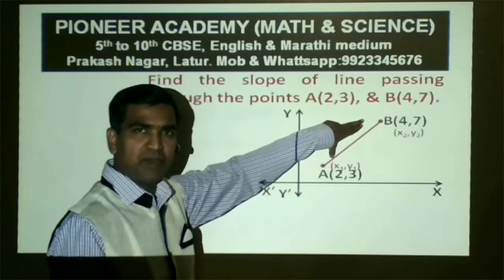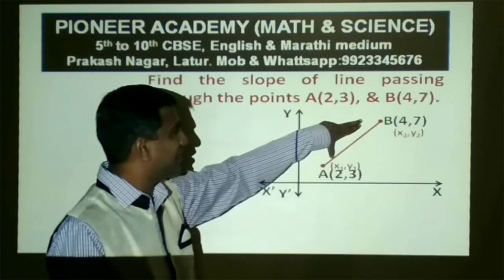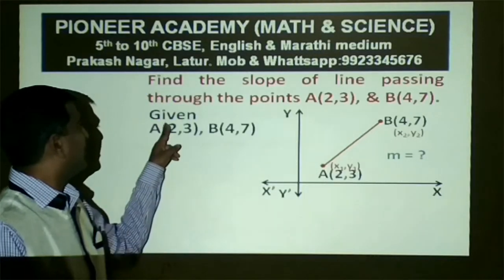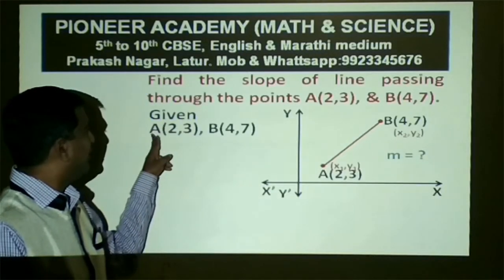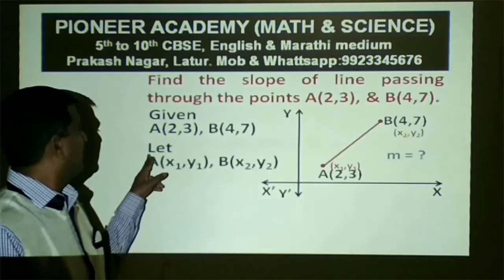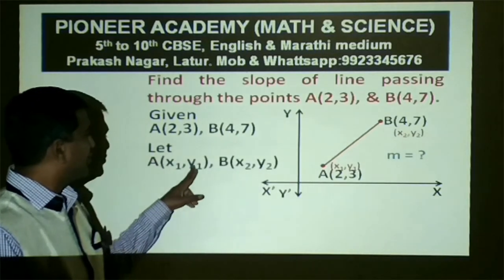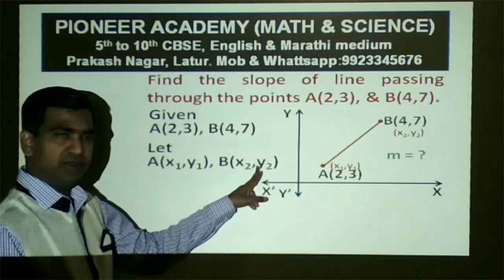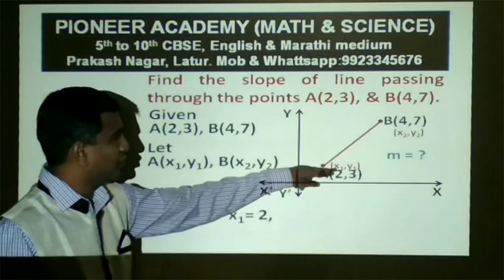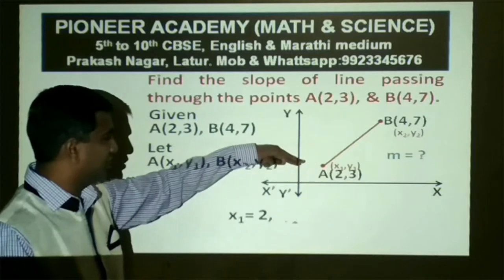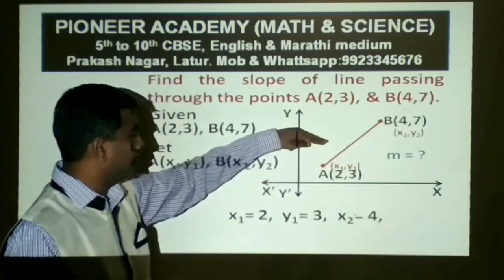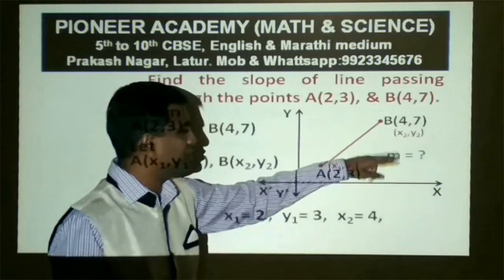We need to find the slope m, which equals a question mark. Given: A is (2, 3) and B is (4, 7). Let A be (x1, y1) and B be (x2, y2). So x1 = 2, y1 = 3, x2 = 4, and y2 = 7.